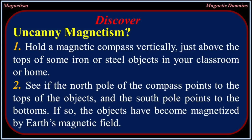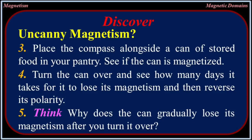Uncanny magnetism activity: hold a magnetic compass vertically just above the tops of some iron or steel objects in your classroom or home. See if the north pole of the compass points to the tops of the objects and the south pole points to the bottoms. If so, the objects have become magnetized by Earth's magnetic field. Place the compass alongside a can of stored food in your pantry to see if the can is magnetized. Turn the can over and see how many days it takes for it to lose its magnetism and then reverse its polarity.